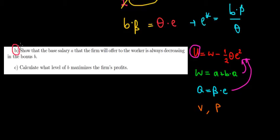Let's have a look at part B now. Show that the base salary A that the firm will offer is always decreasing with the bonus. Now what does that mean?